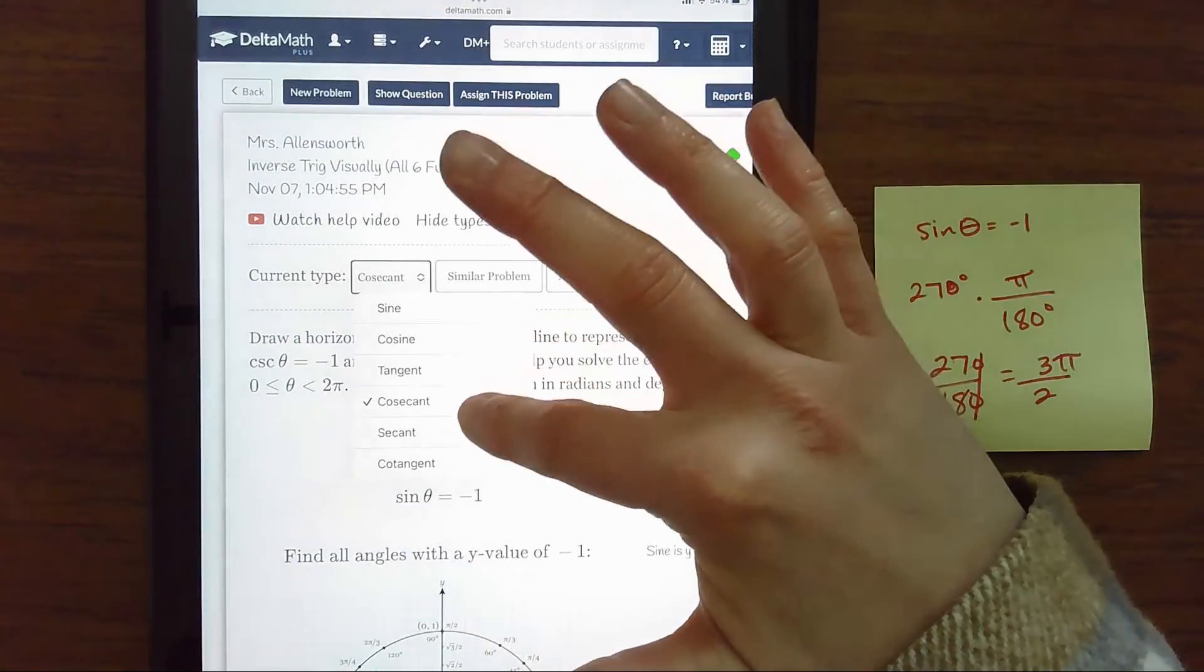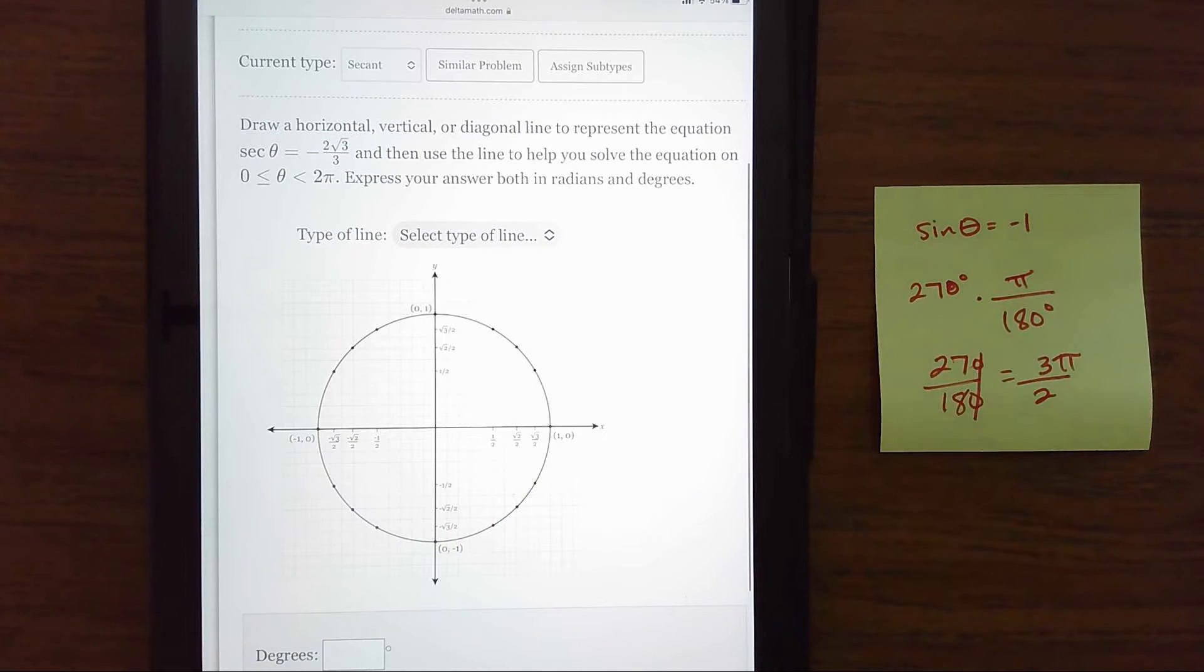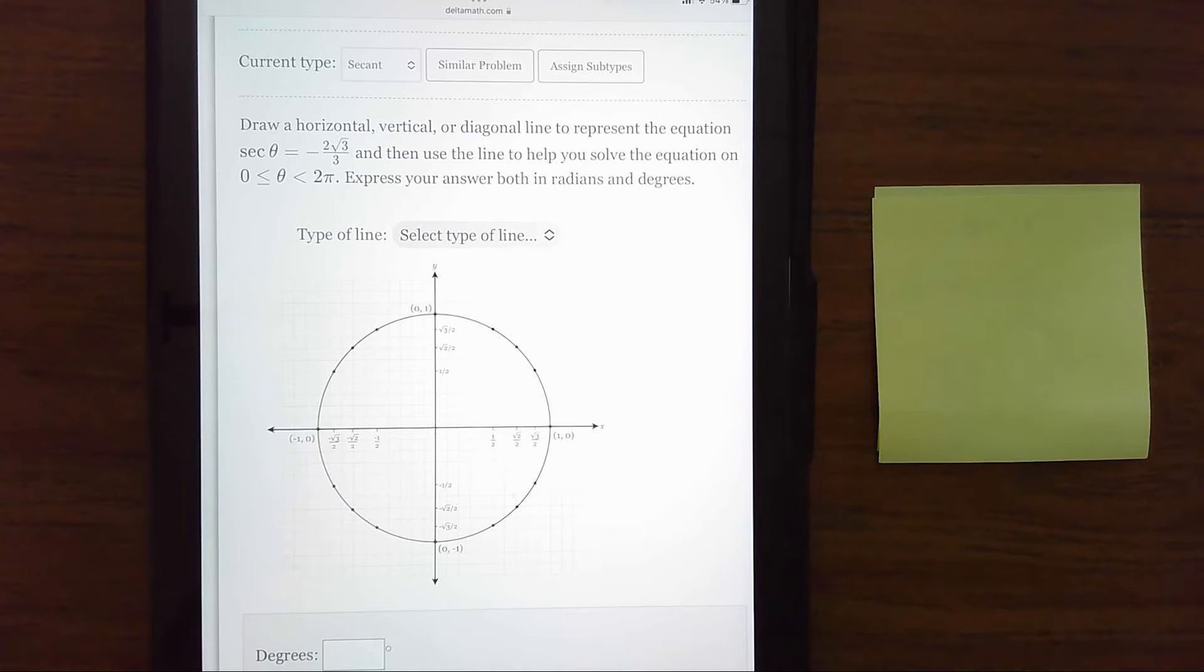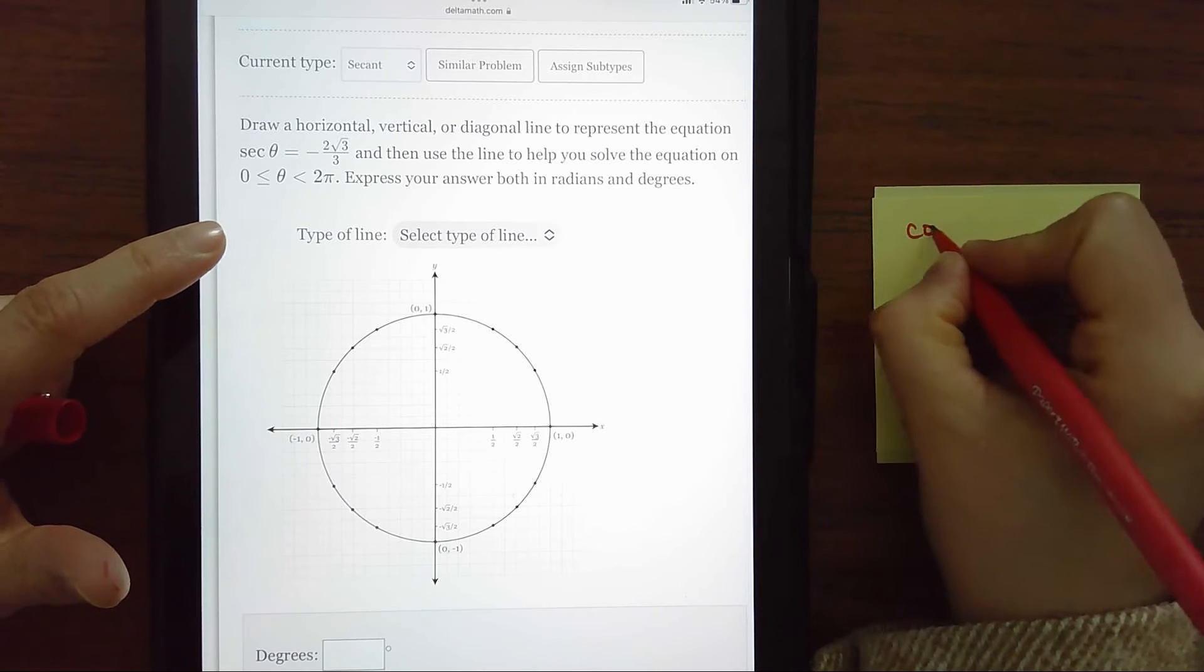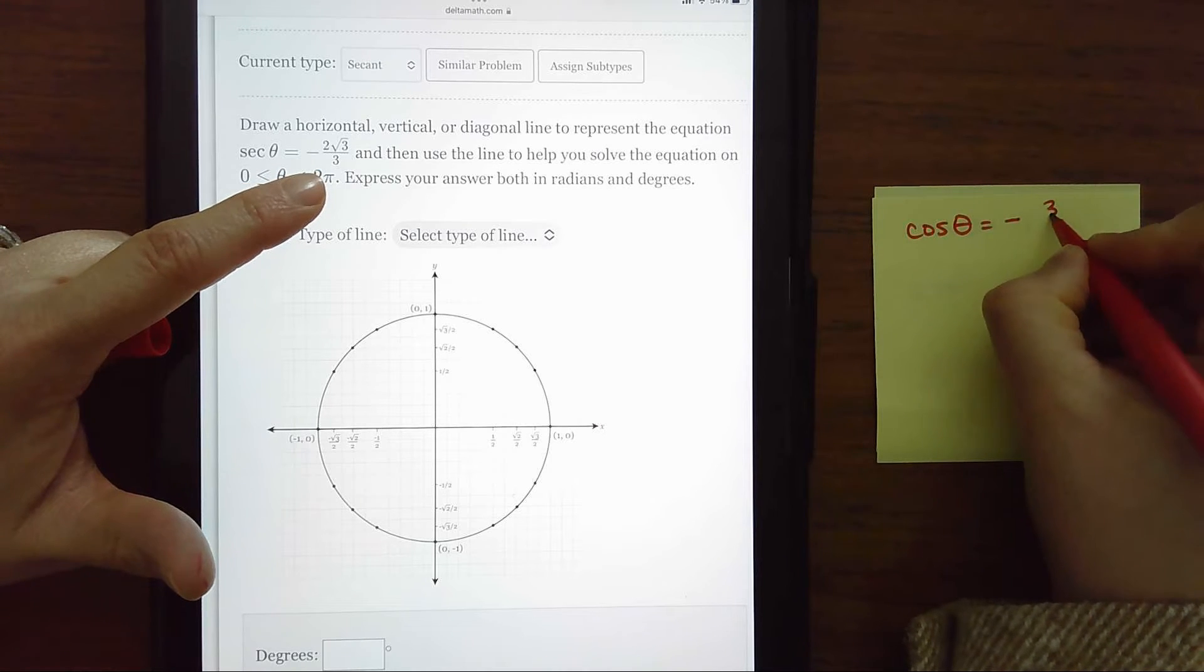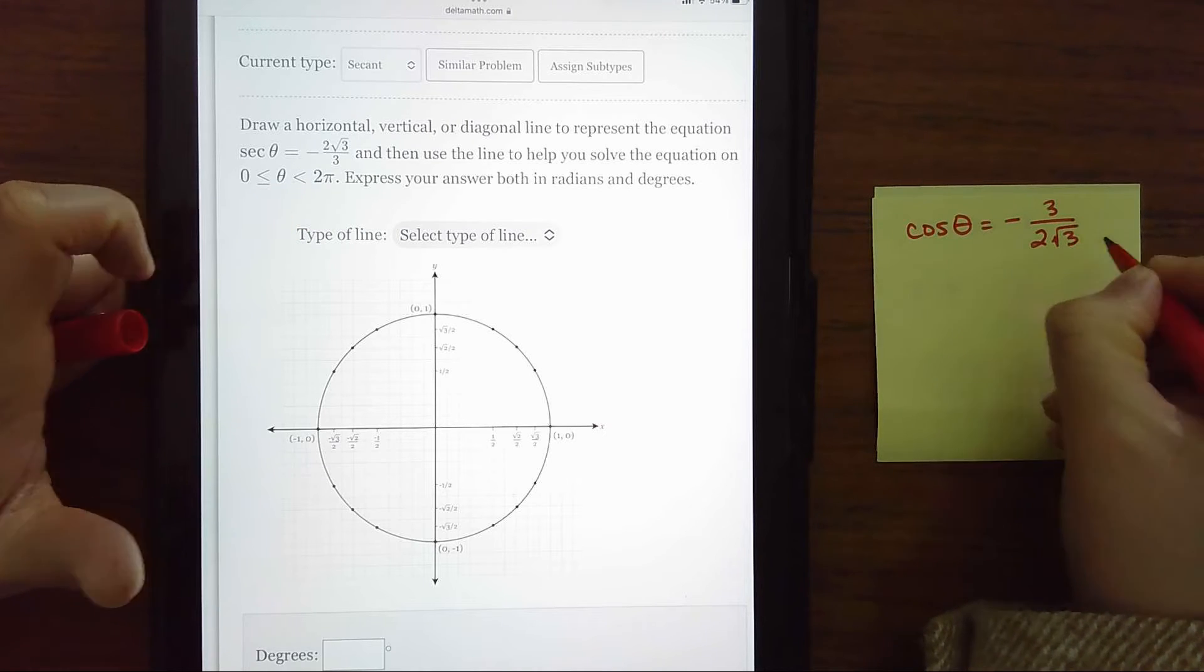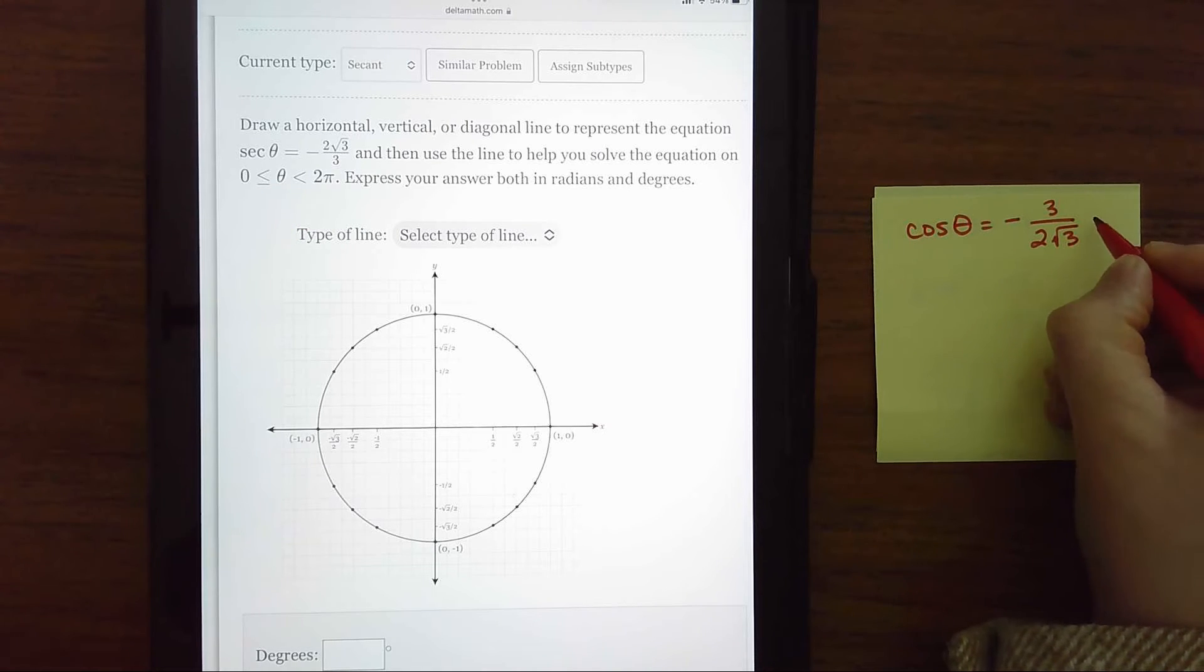Okay, let's pick a secant. Remember secant is the reciprocal of cosine. And so we want to reciprocate this function and say cosine of an angle needs to equal negative. We'll flip this and have three over two square roots of three. You'd have to rationalize the denominator, so multiply by square root of three over square root of three.